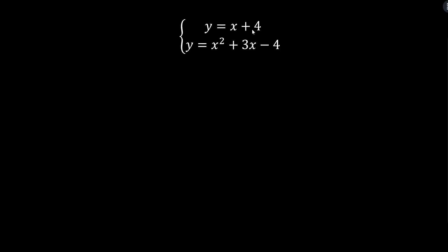First, let's talk about what it means to solve a system of equations. Algebraically, we're looking for all possible ordered pairs that satisfy both equations. If I have some ordered pair and I can plug a in for x and b in for y and it makes both equations true statements, then that ordered pair is a solution. We can have no solution, one solution, two, three, four — different numbers of solutions. Graphically, we can think about it as all the points of intersection between the two graphs.